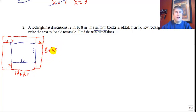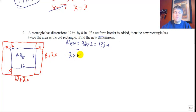So the dimensions of my new rectangle is 2x plus 8 by 2x plus 12. Now, my new rectangle has an area that's double the old rectangle. The old rectangle has an area of 96. So my new rectangle has an area of 96 times 2, or 192 units. So my dimensions of my new rectangle, 2x plus 8 by 2x plus 12, equals my new area of 192.